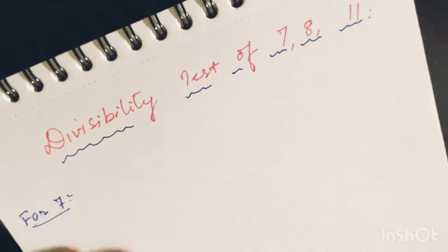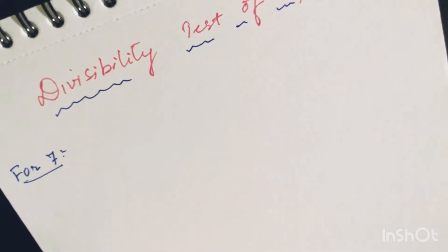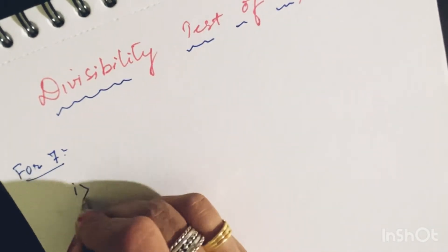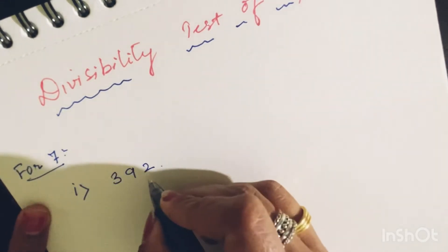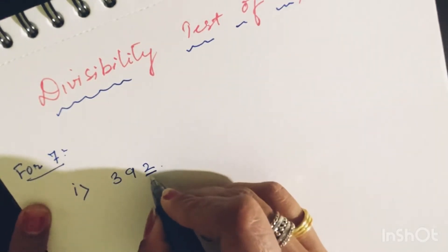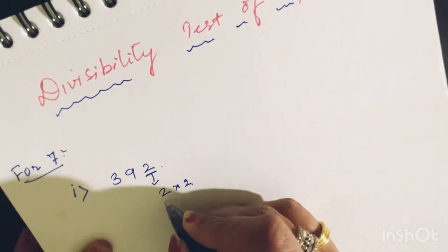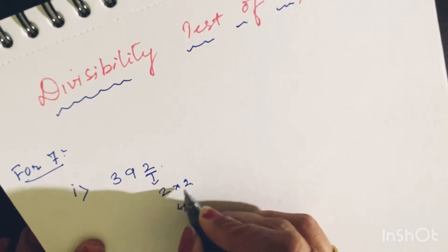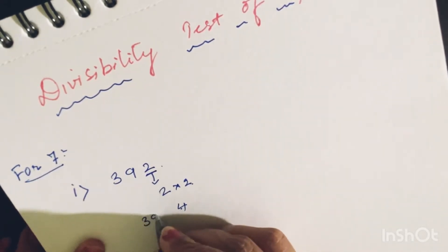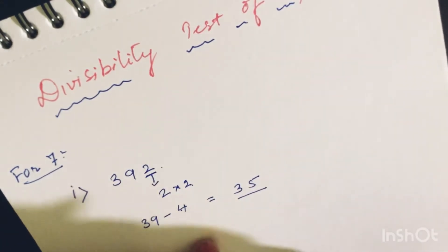So let us continue. To check the divisibility test of 7, let us start with an example. Example 1 is 392. For the divisibility test of 7, we have to take the last digit and double it. The last digit here is 2, so 2 times 2 is 4. Now we subtract that doubled value from the rest of the number, which is 39. So 39 minus 4 gives us 35.